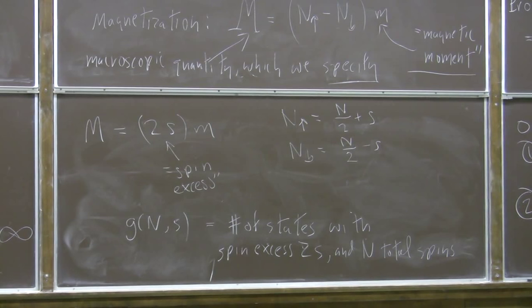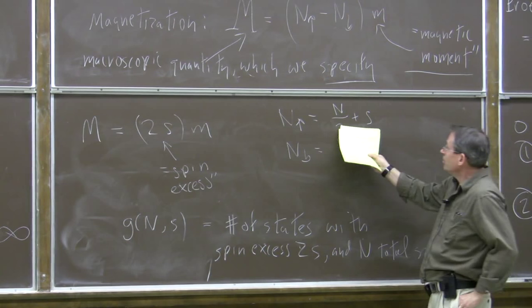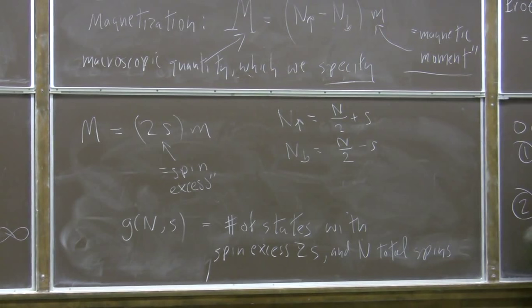Computing this is just the same mathematical question as asking: how many ways, when I flip a coin n times, are there to get a number of heads which is half of all the flips plus s? Same thing — but I made it sound like physics.